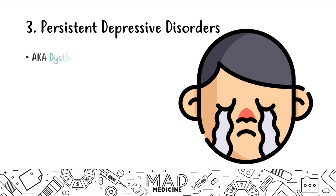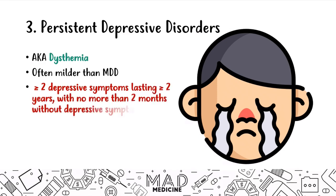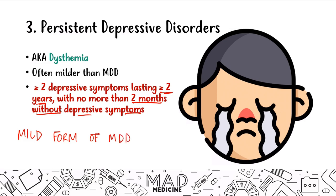Our third disorder is persistent depressive disorder, also called dysthymia or dysthymic disorder. Dysthymia is often milder than major depressive disorder. Patients have two or more depressive symptoms lasting greater than or equal to two years, with no more than two months without depression. It's essentially a mild but long-lasting form of MDD.